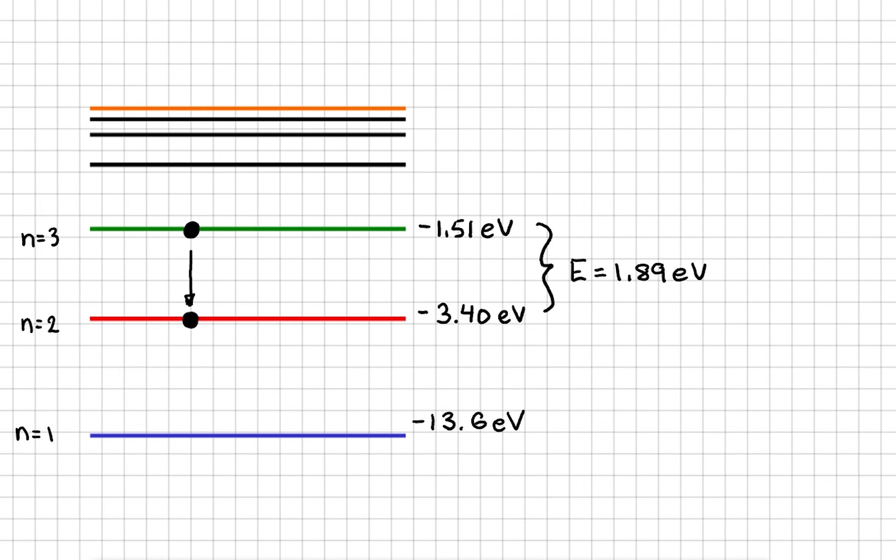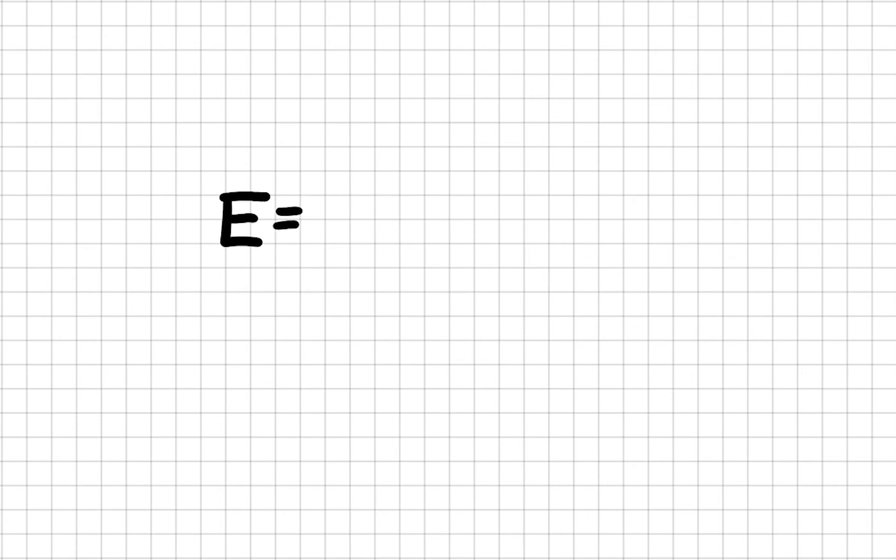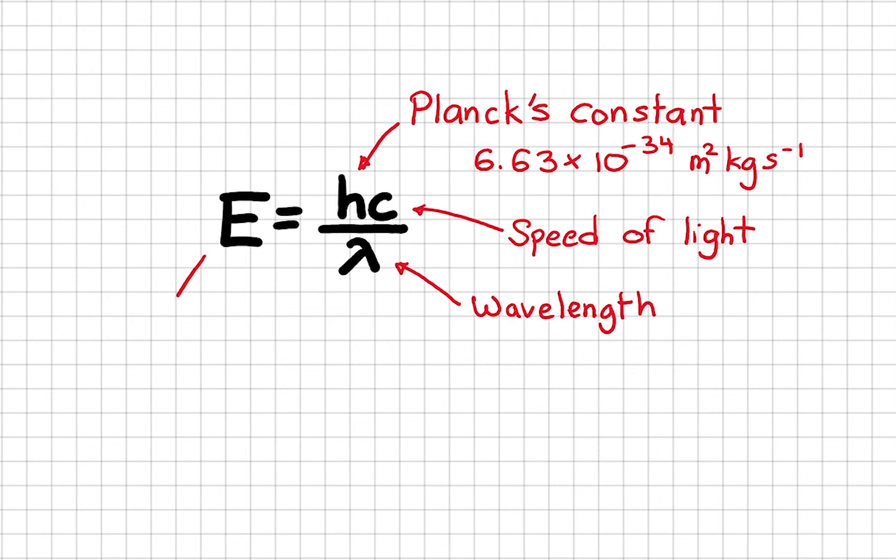To calculate the corresponding wavelength, we can use this equation that involves Planck's constant. E equals hc over lambda. Planck's constant is 6.63 times 10 to the power of minus 34. This is the photon's energy here, which needs to be in joules. I can rearrange this to make the wavelength the subject.